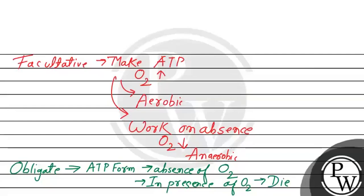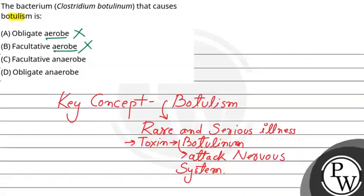So the question was: the bacterium Clostridium botulinum that causes botulism is — and we have options given. We have seen that facultative bacteria can switch between both aerobic and anaerobic, so that can't be our correct option. Our correct option will be obligate anaerobic. So Option D is the correct option. I hope you understand it well. Best of luck. Thank you.